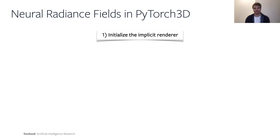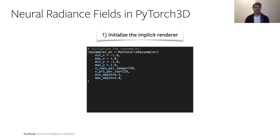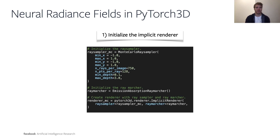The first step of the neural radiance field implementation in PyTorch3D is to define the implicit renderer, which can be done in very few steps. Since NeRF renders only a random subset of image pixels, we initialize the ray sampler as a Monte Carlo ray sampler. We then initialize the ray marcher — following the paper, we use the emission absorption ray marcher — and then create the renderer by passing these two objects to the ImplicitRenderer constructor. In just three lines of code we have defined the renderer of an implicit function.